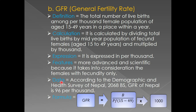Now for important data: according to the Demographic and Health Survey of Nepal 2068 BS, the GFR of Nepal is 96 per thousand. This means there are 96 live births per thousand mid-year population of fecund females aged 15 to 49 years. In this way we can easily understand GFR.